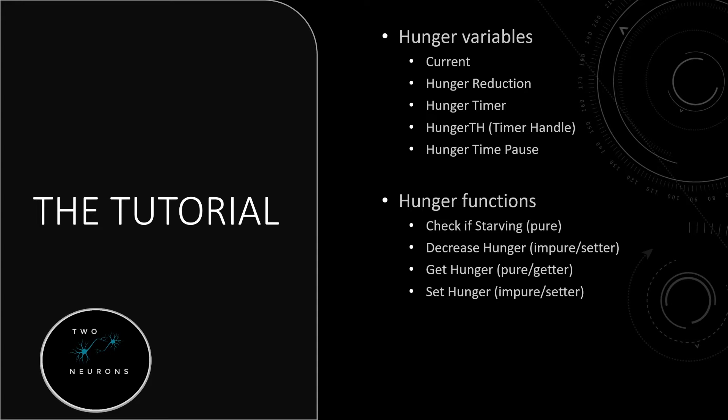We'll have our usual array of functions — two pure and two impure. The pure functions will check if the character is starving, returning a bool. We'll have our decrease hunger, which actually increases the want for food — again, it's the inverse. We have our get hunger, which is a pure getter, and our set hunger, which is an impure setter. We're consolidating our knowledge by implementing this through looping timers, and we'll pause the timer at certain points — like when the character eats — so they don't suddenly start getting hungry right away.